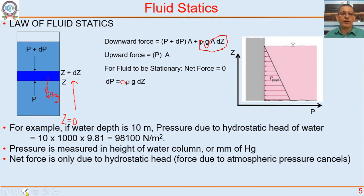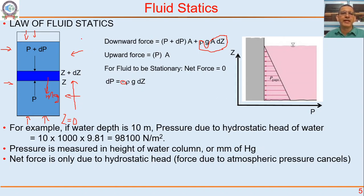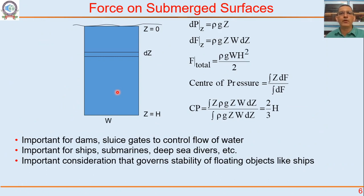Note that if we talk about the net force on the bottom of a beaker, atmospheric pressure acts on the surface from above and also on the bottom from below, so atmospheric pressure cancels out. The net force at the bottom is only due to the hydrostatic head: height × ρ × g.